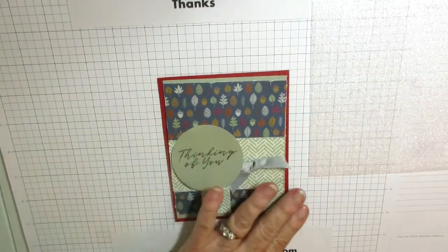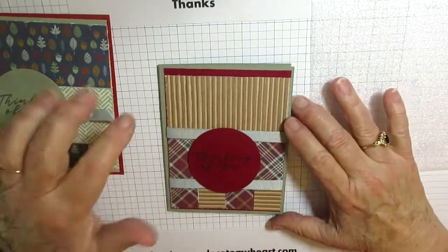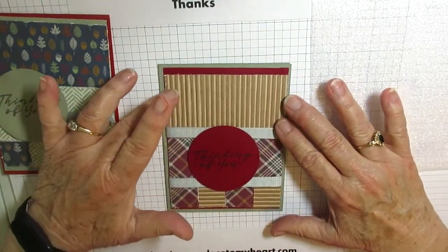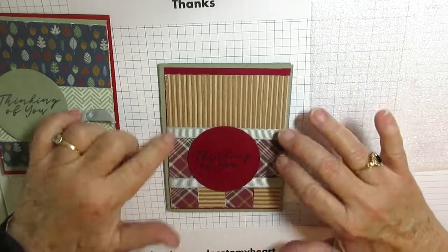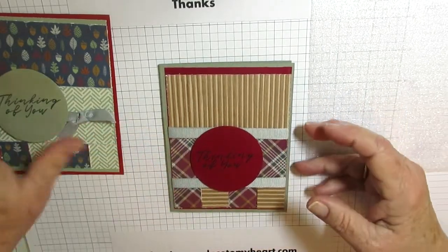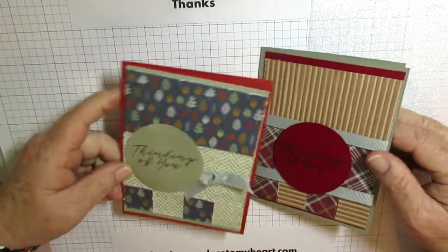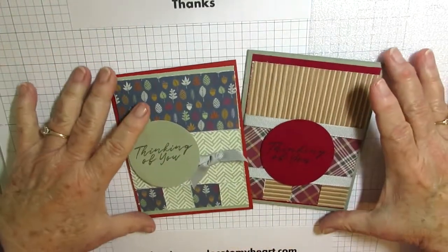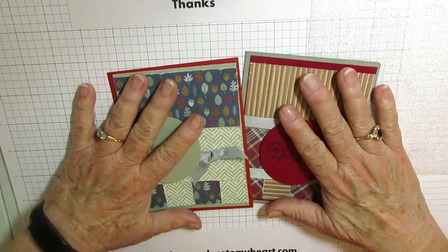I did a different one using another sheet from Hawthorne. And I put two pieces of ribbon. I popped up the thinking of you. And I had this feeling in my mind and in my heart that these would be a masculine look.